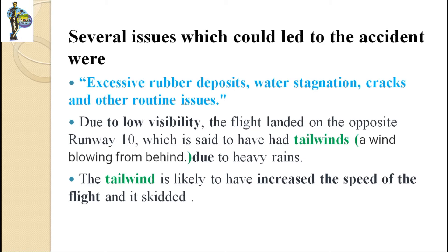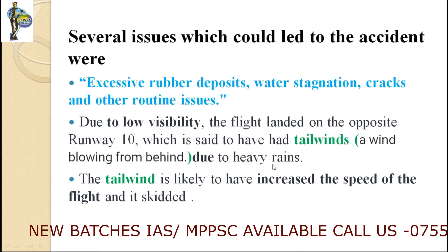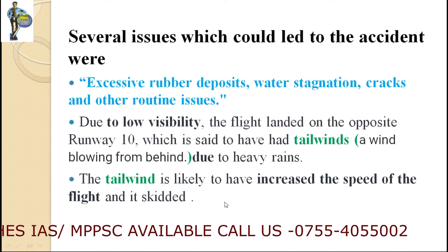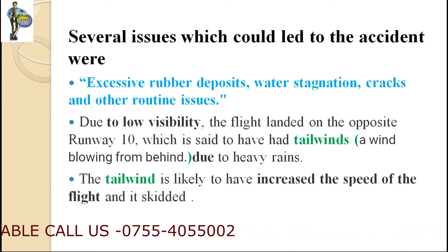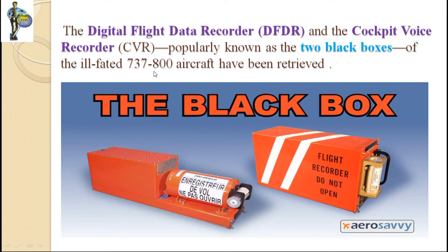Due to the excessive rains, there was low visibility and excessive tailwinds. Because of the strong tailwinds, the flight was landing in the opposite direction, which added to the risk of the landing.